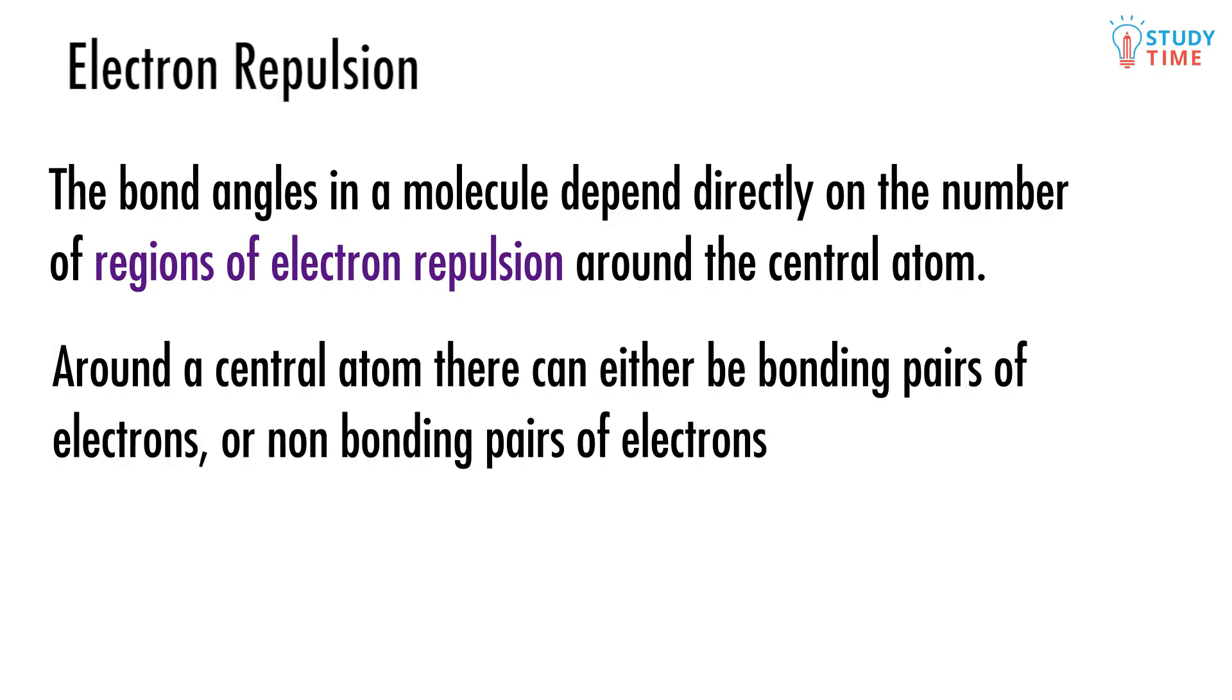Around a central atom, there can either be bonding pairs of electrons or non-bonding pairs of electrons. In reality, because the non-bonding pairs have a greater repulsion than the bonding pairs, we see a bunch of different shapes and molecules.